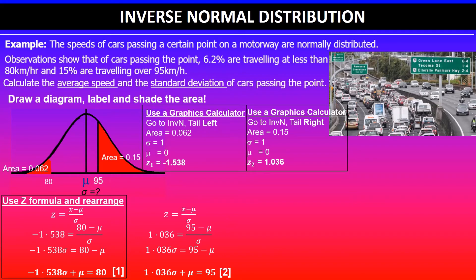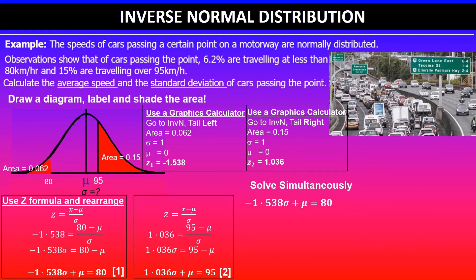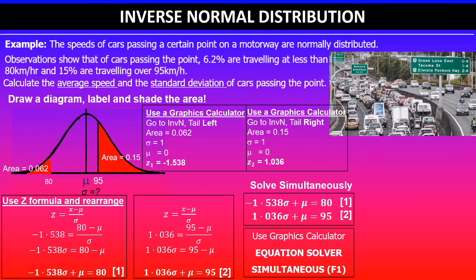We have two equations and two unknowns, so we'll solve them simultaneously. You could solve this algebraically, but we are not assessed on algebraic skills, so we'll use the graphics calculator. Go to Menu, then select Equations, then F1 for simultaneous equations. Select two unknowns, since we have two equations and two unknowns.